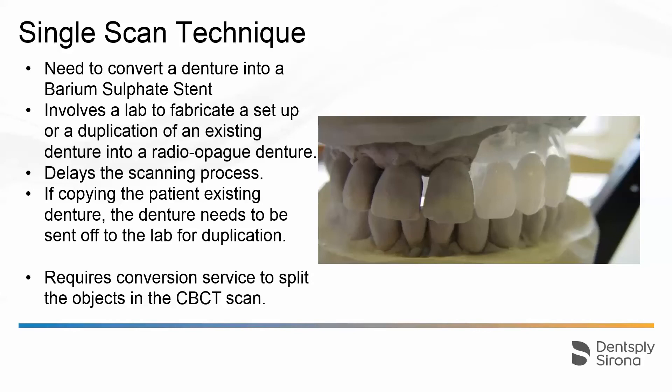There's a bit of a process involved — you'd need to have either a complete new setup done with a try-in and then a conversion into a barium sulfate denture, which means some delay and costs involved. If you are using the patient's existing denture and just duplicating it, just make sure it is well fitting in the patient's mouth. If not, you would need to do a reline.